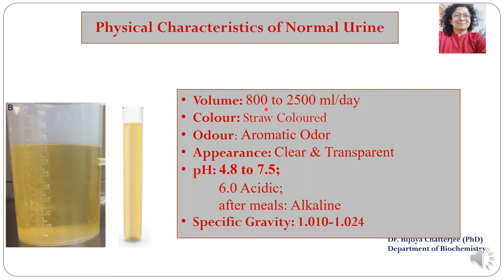The volume of a normal person's urine lies between 800 to 2500 ml per day. The color of normal urine is generally straw-colored. Odor is aromatic or ammoniacal. Appearance is clear and transparent if freshly collected. pH ranges from acidic to alkaline; on average throughout the day it remains acidic at around 6, though after meals urine may turn alkaline due to the alkaline tide. Specific gravity lies between 1.010 to 1.024.